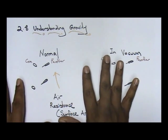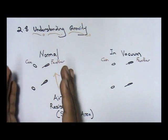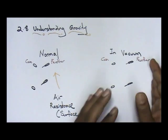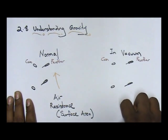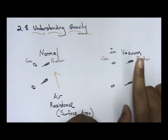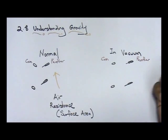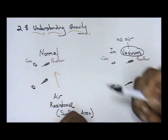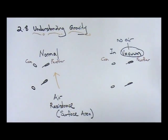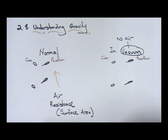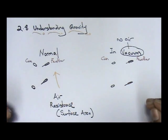This is the normal condition. Now, to test gravitational force, you have to conduct your experiment in vacuum. Vacuum means no air — like in space, no air. When you take your coin and your feather and drop them at the same time in vacuum, both the coin and the feather will actually fall down equally at the same time. The reason is because there is no air resistance, so both fall equally.